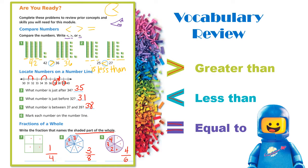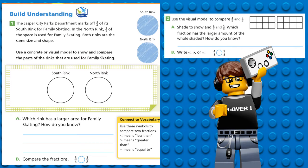I think you're ready to get into our lesson. Go ahead and turn to page 401 and follow along. Boys and girls, let's start with the build understanding. I'm going to do two reads, and I really hope you do the third read on your own. On our first read, we're making a movie in our heads — thinking about what the situation is about before we look at the quantities. The Jasper City Parks Department marks off three fourths of its south rink for family skating. In the north rink, three eighths of the space is used for family skating. Both rinks are the same size and shape. Use a concrete or visual model to show and compare the parts of the rinks used for family skating.